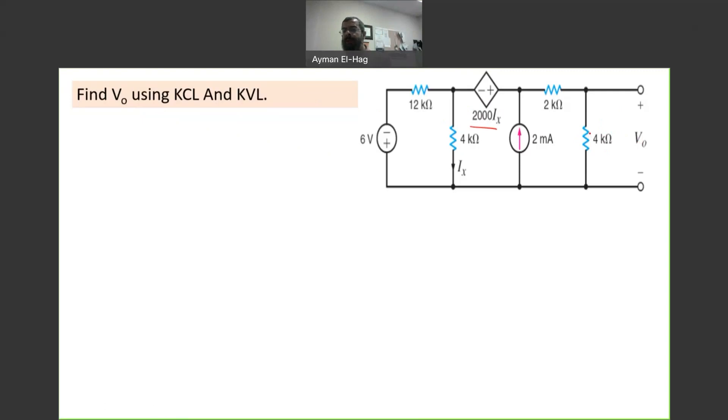First, can we do any circuit reduction? The only thing I can see here is this 2 kilo and this 4 kilo. They are in series because they share one node and this is an open circuit. However, if I add these two resistors I lost Vout because Vout is only across the 4 kilo ohm resistance. So I cannot add them. But remember, these two are in series so they will have the same current when we assign them.